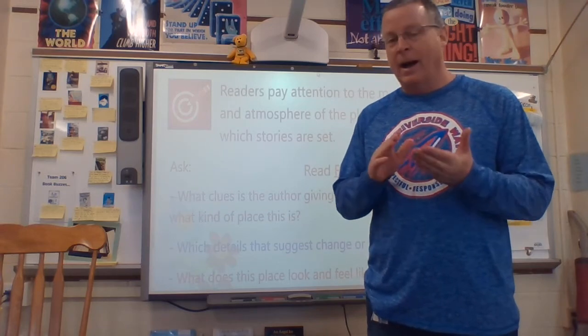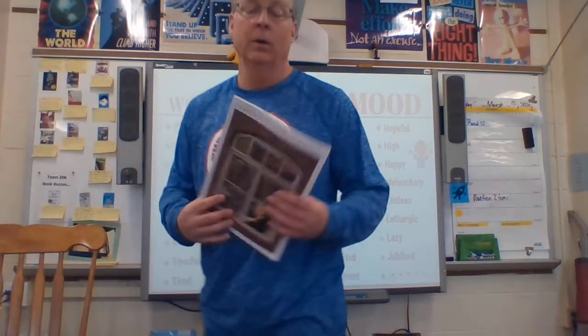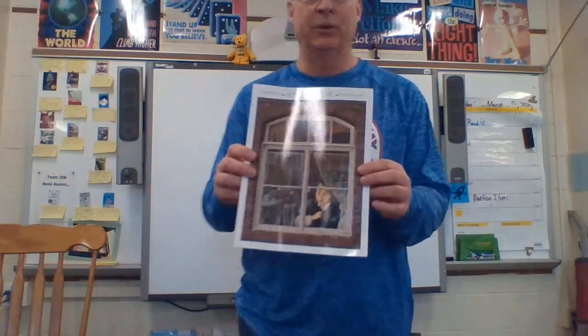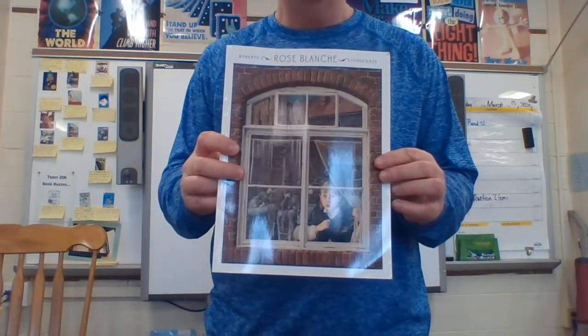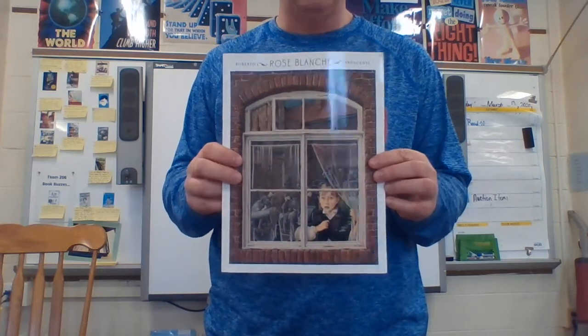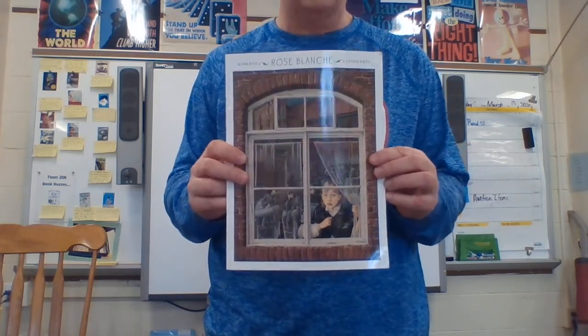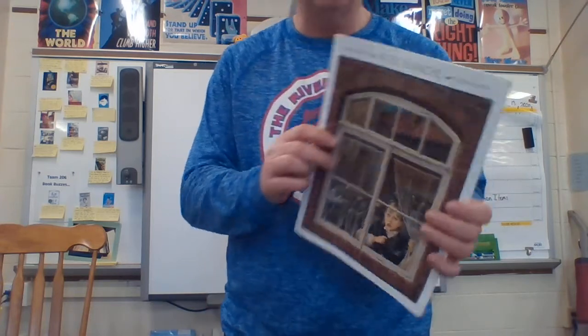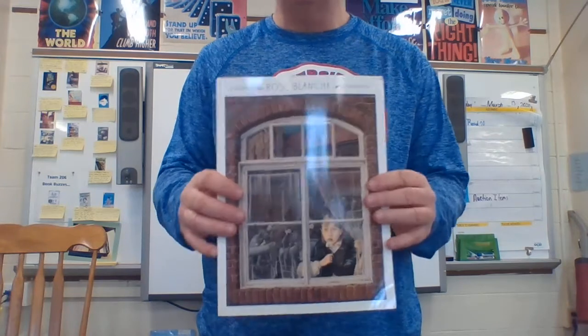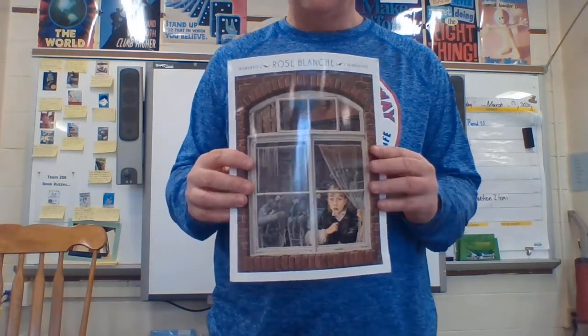I have a book — a part of a book — I'd like to share with you. It's called Rose Blanche. We have included the link to have this entire picture book read to you. Rose Blanche is a story written by Roberto Innocenti, and it's a book we'll be referring to throughout a lot of our lessons. I want to draw your attention to a couple of pages near the beginning.